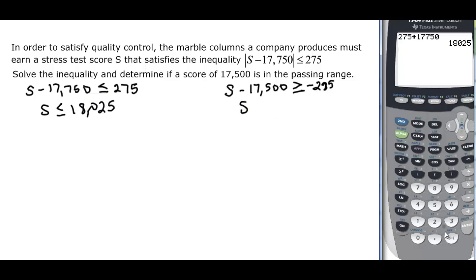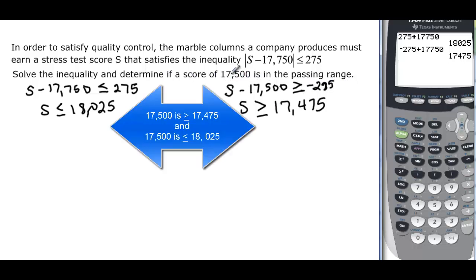And if we add it to negative 275, S is going to be greater than or equal to 17,475. The question says determine if a score of 17,500 is in the passing range. 17,500 is greater than that, so yes it passes.